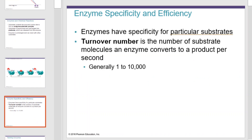Enzymes have specificity for particular substrates. Turnover number is the number of substrate molecules an enzyme converts to a product per second. Generally, enzymes can turn over 1 to 10,000 molecules per second.